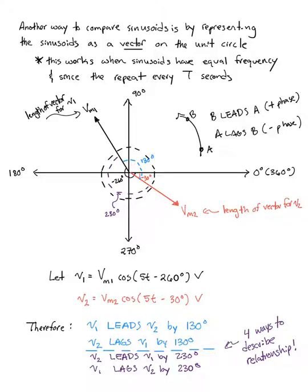If I take two sinusoids, for example v1 = Vm1 cos(5t - 260°), to represent it as a vector, I need the magnitude Vm1 as the length, and the phase shift of negative 260 degrees. To represent negative 260 degrees, we go clockwise 260 degrees. This is the same as positive 100 degrees. So this equals Vm1 cos(5t + 100°). These are equivalent definitions.